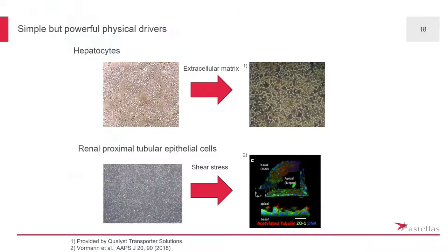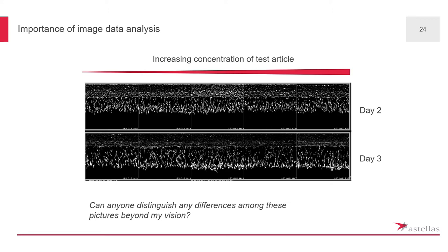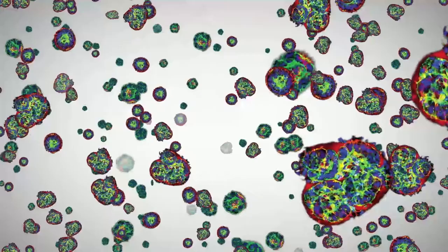The bottom file shows an example of a lumen-proximal tubular epithelial cell set. We wanted to evaluate any effect of test articles on angiogenesis.